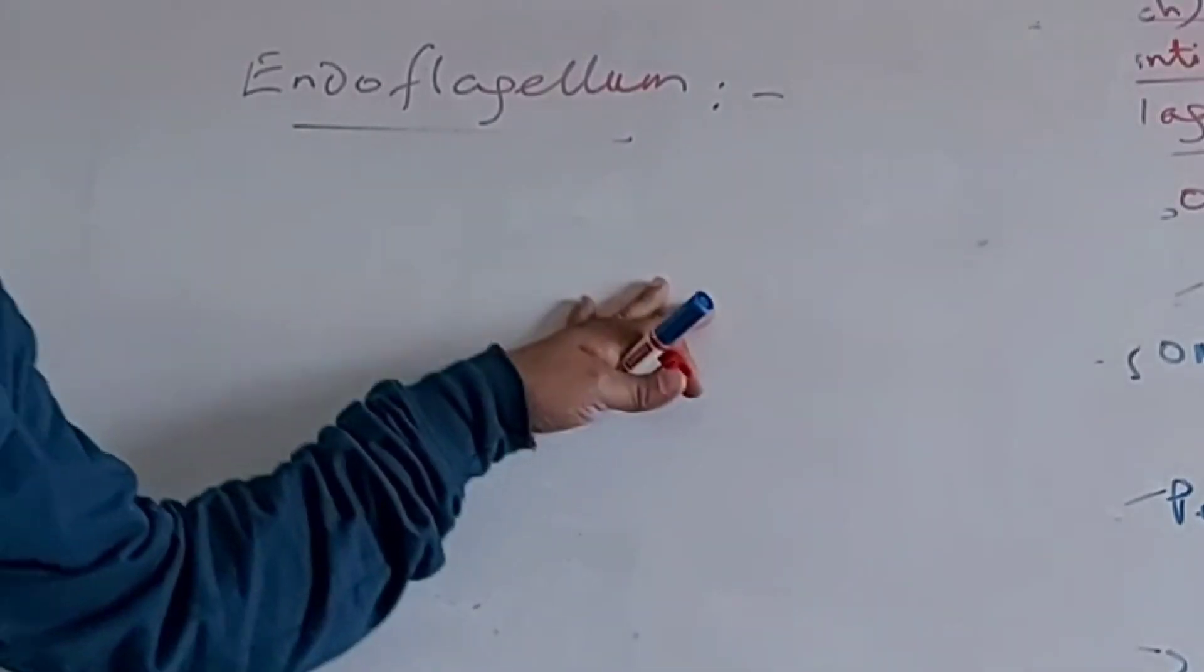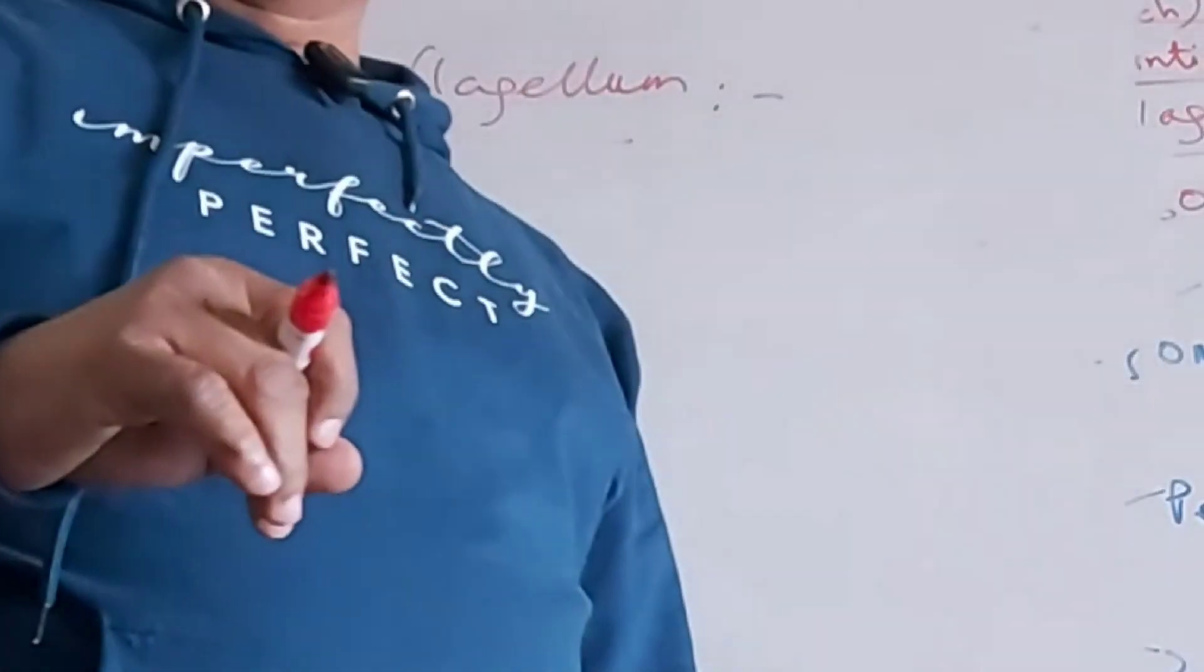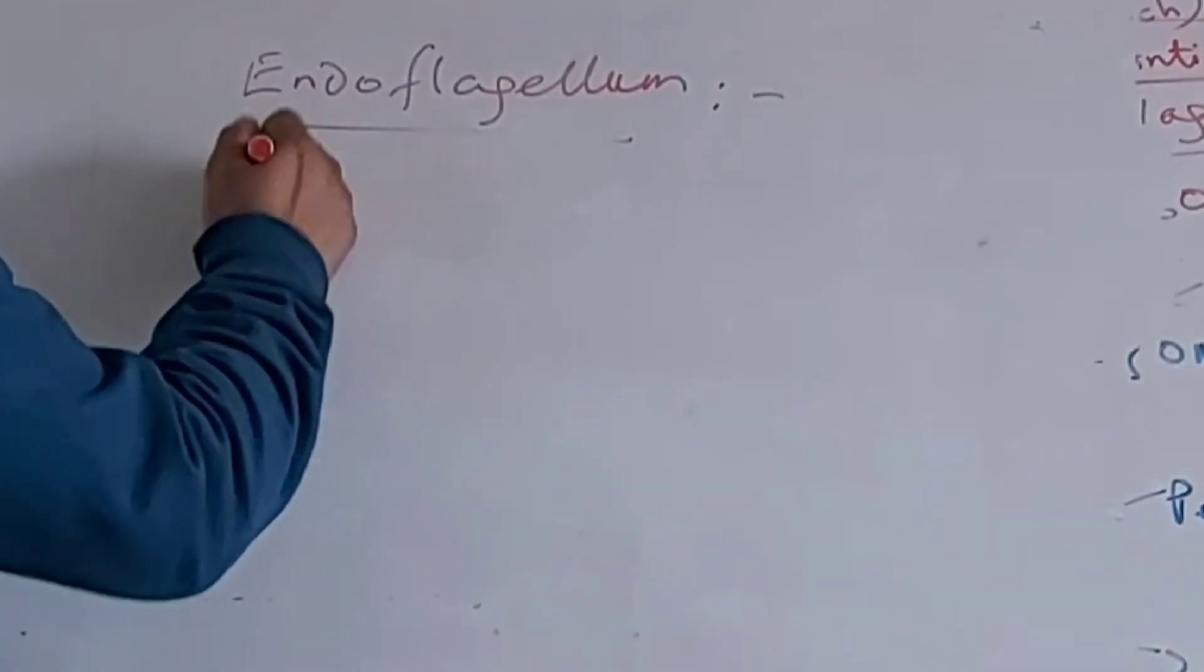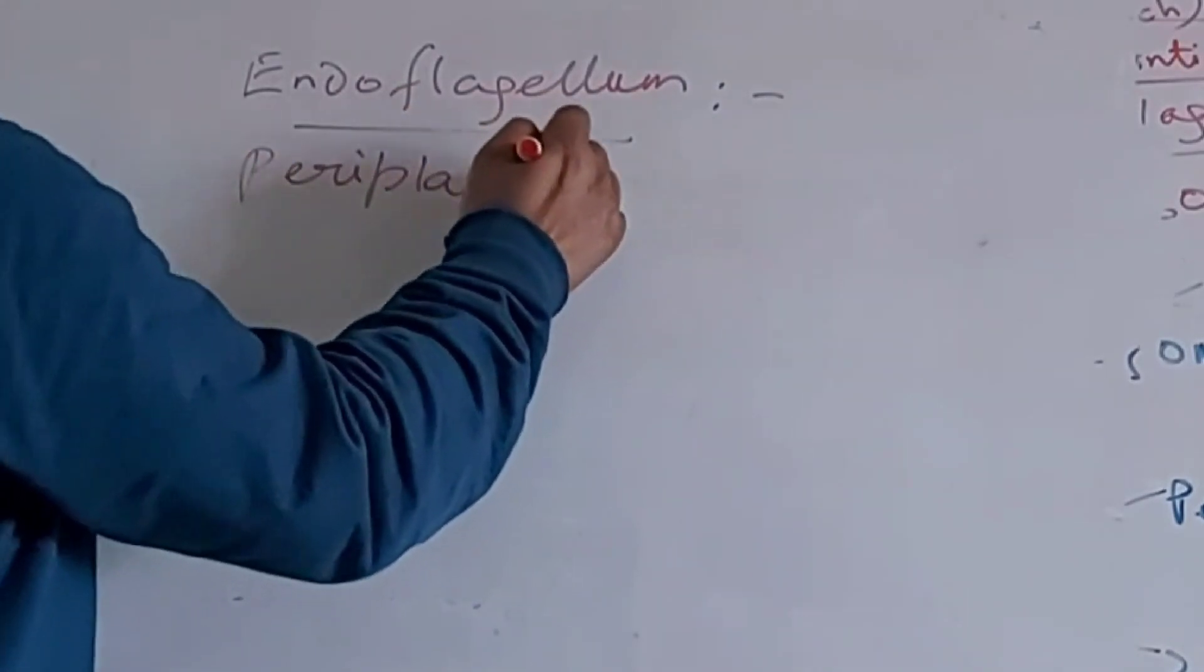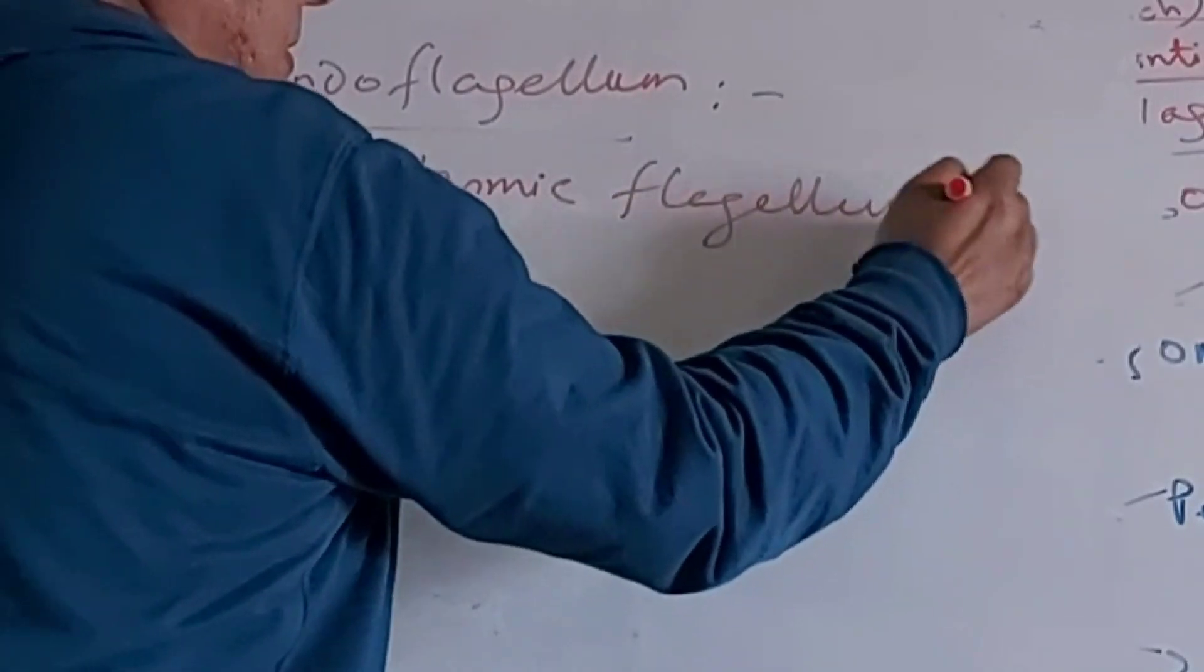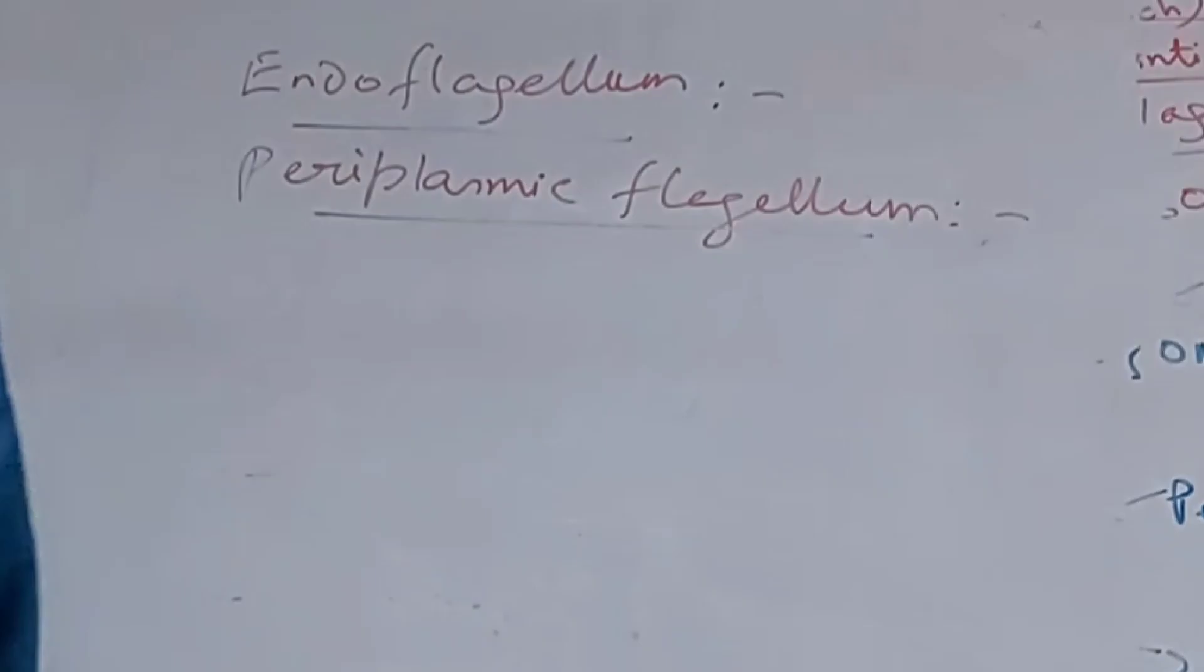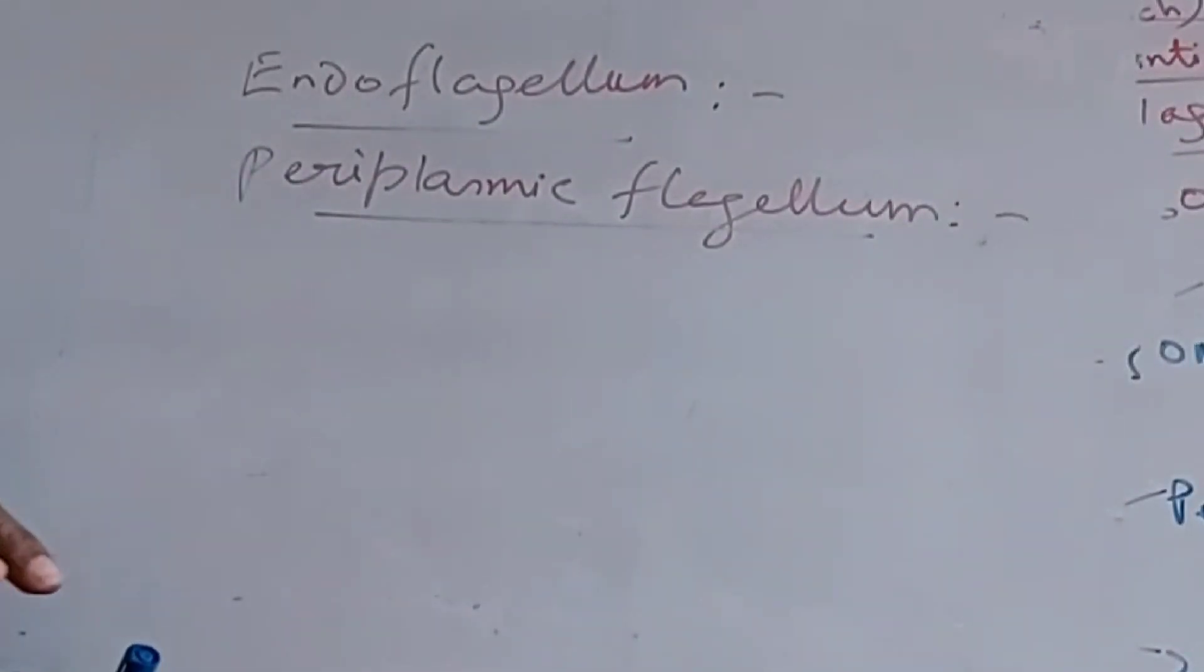This endoflagellum, flagellum within the cell envelope, within the periplasm, this is also called periplasmic flagellum. Because it is present just inside the outer membrane in the periplasmic region,